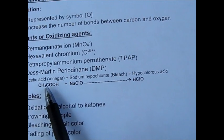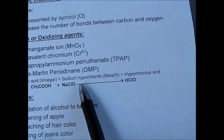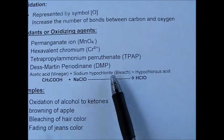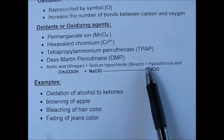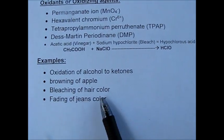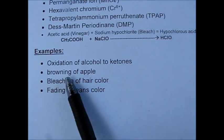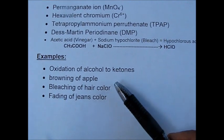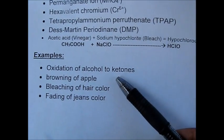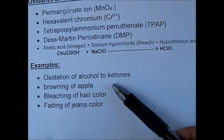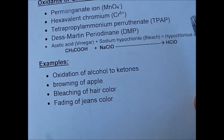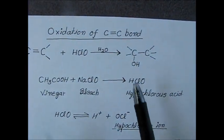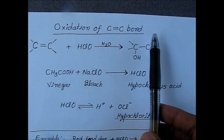You can make hypochlorous acid by adding vinegar or acetic acid to hypochlorite, which is bleach. This reaction we can perform easily at home. Examples of oxidation include oxidation of alcohols to ketones, browning of apples and vegetables and fruits, bleaching of hair, and fading of jeans color.